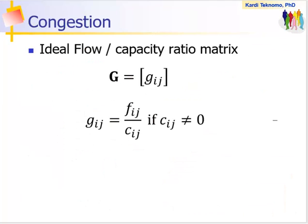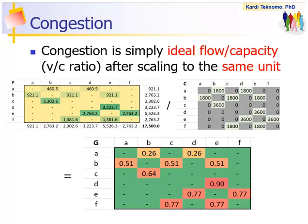Congestion is simply ideal flow divided by capacity, which is often also called volume per capacity or V-C ratio, after scaling to the same unit. Thus, we must use the same unit of PCU per hour per direction. Congestion itself has no unit or is unitless.